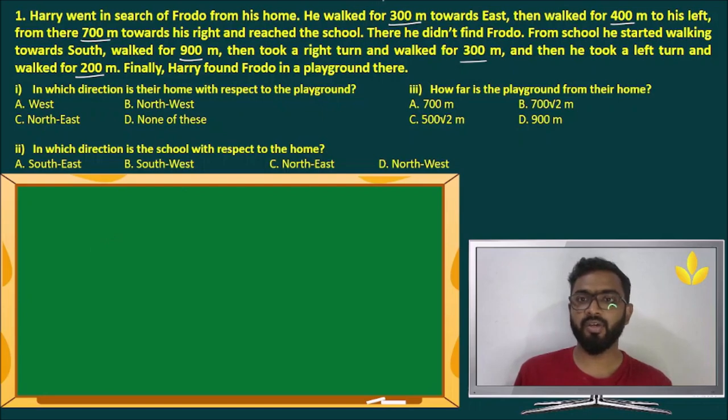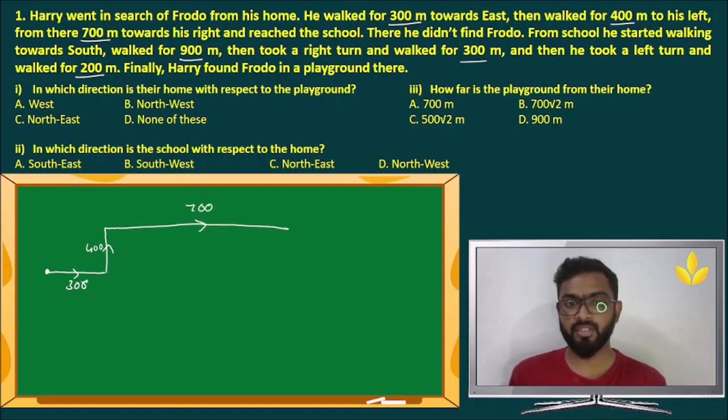So let's get started. Now he walked for 300 meters towards east. From here, Harry walked 300 meters to his east. Because 200 is the smallest line, 300 meters also will be pretty small. Then he walked for 400 meters to his left. He is facing this side, so left will be up, 400 over here. From there, 700 meters to his right, 700 meters will be around this much long. If this is 300, this is 400, this should be 700. And this is the school, always remember to label the places, school, this is the home.